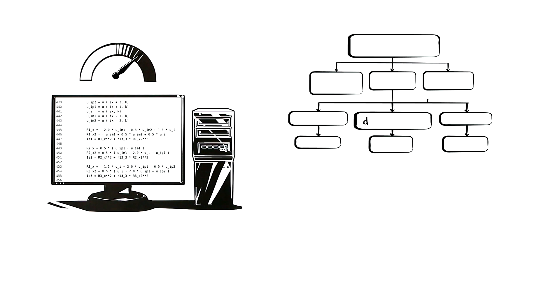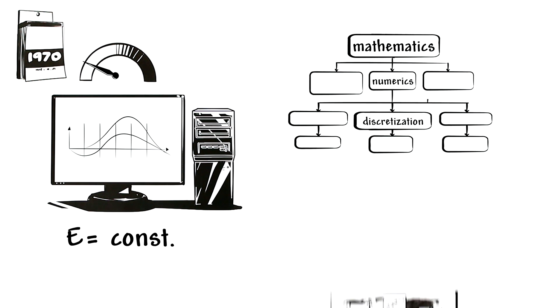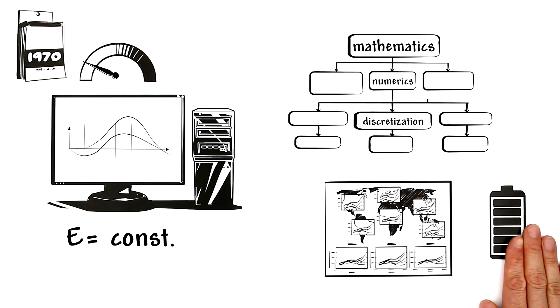This procedure is called discretization and is one of the main tasks of numerical mathematics. Since early computers weren't as powerful as today, the complex conservation laws could only be calculated by rough approximations. The consequence is that even today, climate models don't conserve energy.